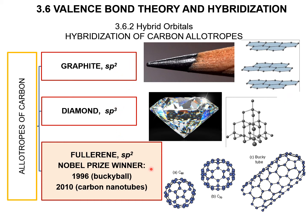The one that was discovered in the 90s is fullerene, in 1996 — the buckyball. And carbon nanotubes were discovered in 2020.